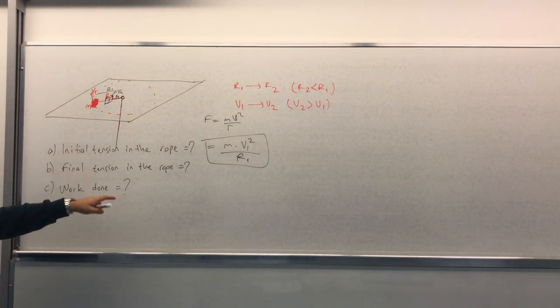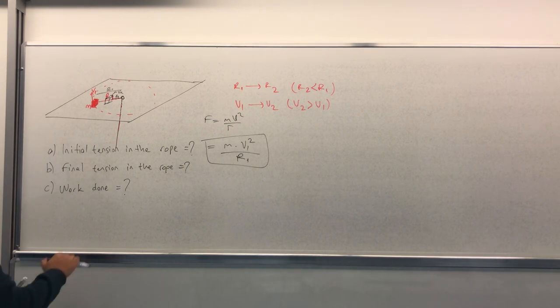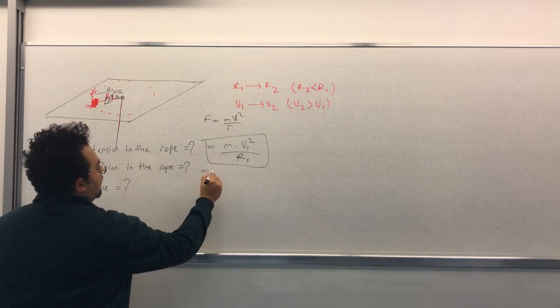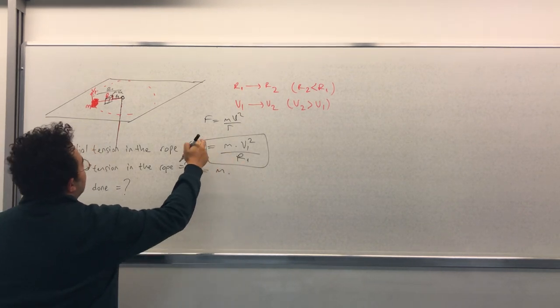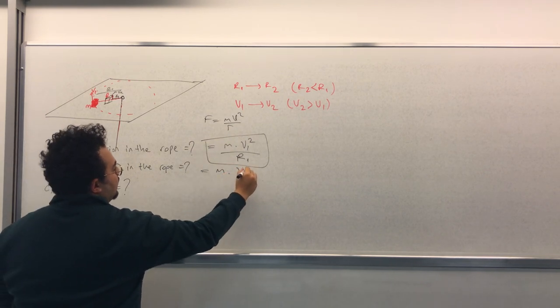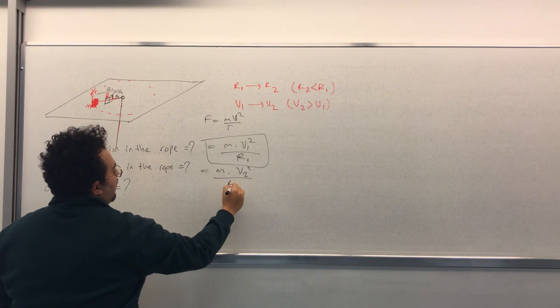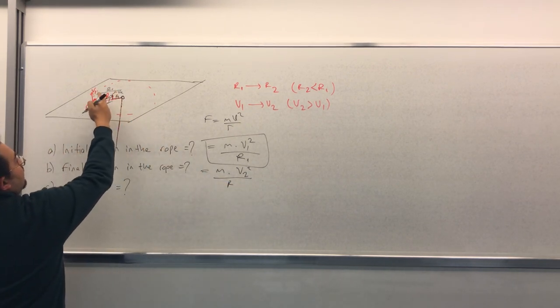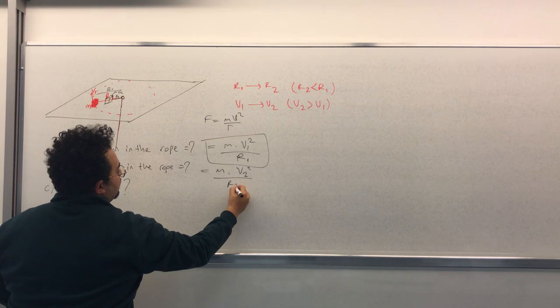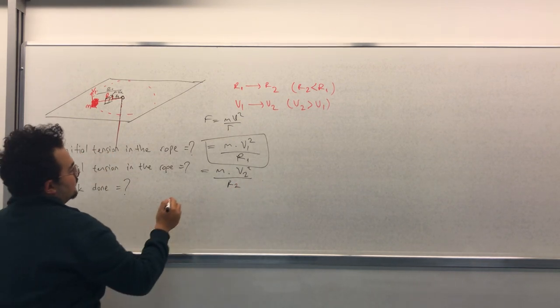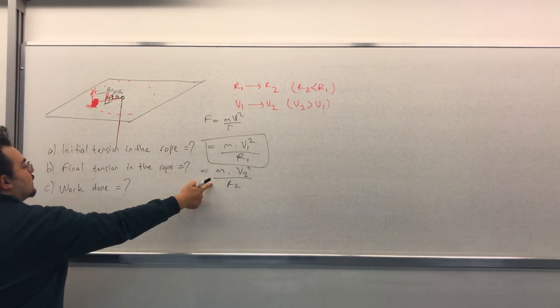What's the final tension in the rope? The final tension is found in the same way: m times v2 times v2 squared divided by the final distance which is R2. This is the final tension in the rope.